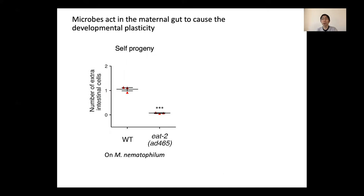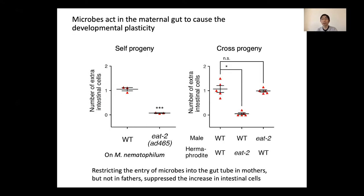First, we examined where the microbes act on the worm. We restricted the entry of microbes into the gut by an eat-2 mutation, which blocks pharyngeal pumping, and we found that extra intestinal cells induced by microbes were suppressed in the mutant. C. elegans is androdioecious, which means it is usually self-fertilizing, but rare males can be crossed with hermaphrodites. In cross-fertilizing embryos, introducing the eat-2 mutation into mothers but not into fathers suppressed the developmental plasticity. These results suggest that the sufficient presence of the microbes in the maternal gut is required for this plasticity.